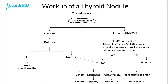If the FNA is indeterminate, then we can perform a radionuclide scan if we have not performed this already. And in the case of having an inadequate specimen, we should first repeat the FNA before determining whether or not this patient is going to need surgery.